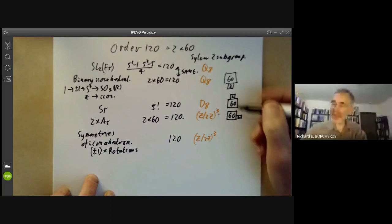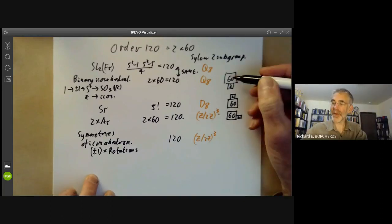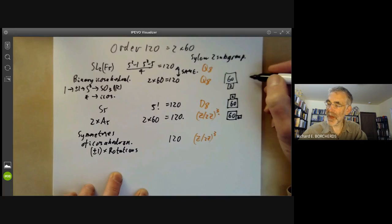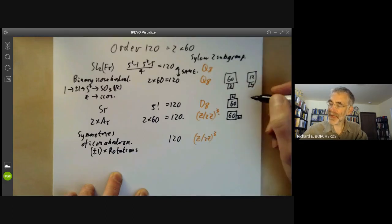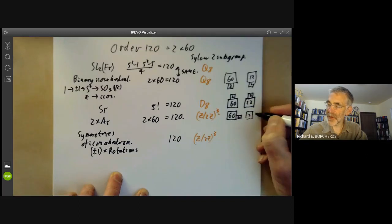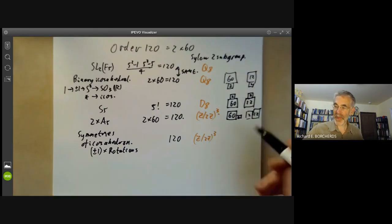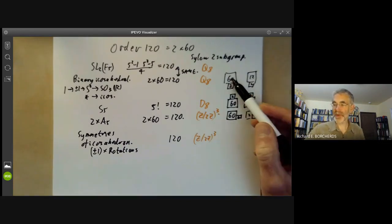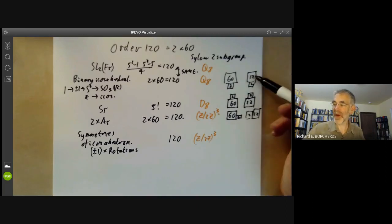And you remember this is very similar to what happened when we looked at groups of order 24. Here we had the binary tetrahedral group that had the group of order 12 at the centre. Then we had the symmetric group S4 again of order 24 and finally we had the group 2 times the tetrahedral group. So the tetrahedral group and the icosahedral group kind of behave very very similarly. They can both be combined in three interesting ways with a group of order 2.